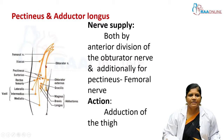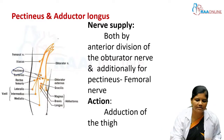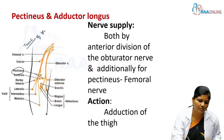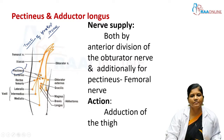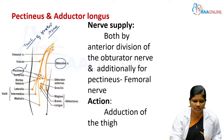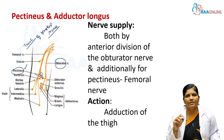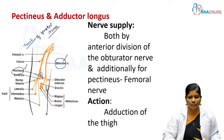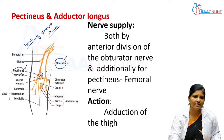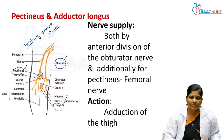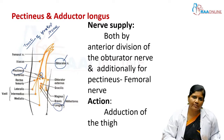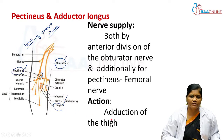The nerve supply of the pectineus is from the femoral nerve — either directly from its trunk or from the nerve to pectineus — and additionally receives a branch from the obturator nerve. The adductor longus receives a branch from the anterior division of the obturator nerve. The action of both muscles is adduction of the thigh.